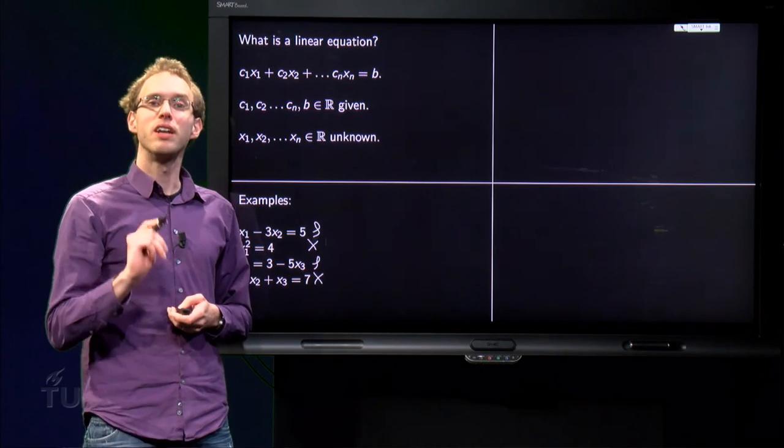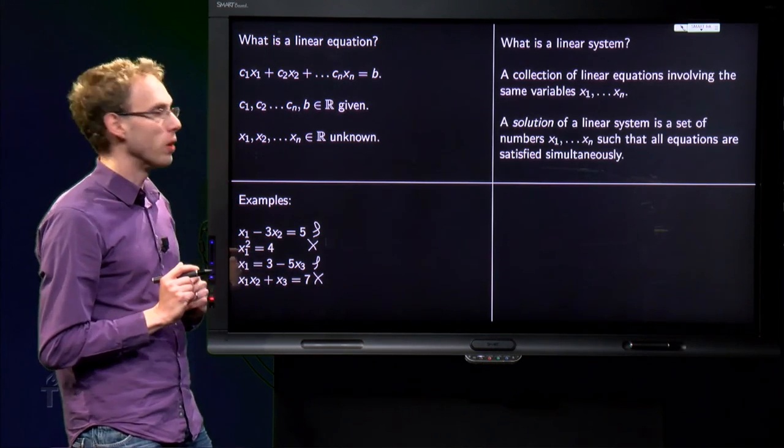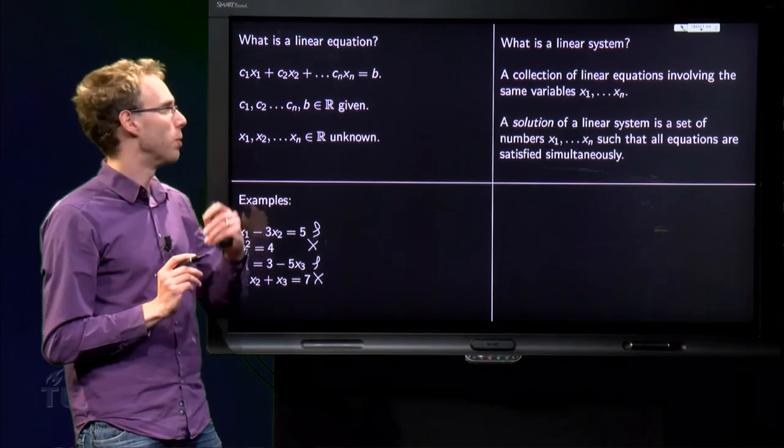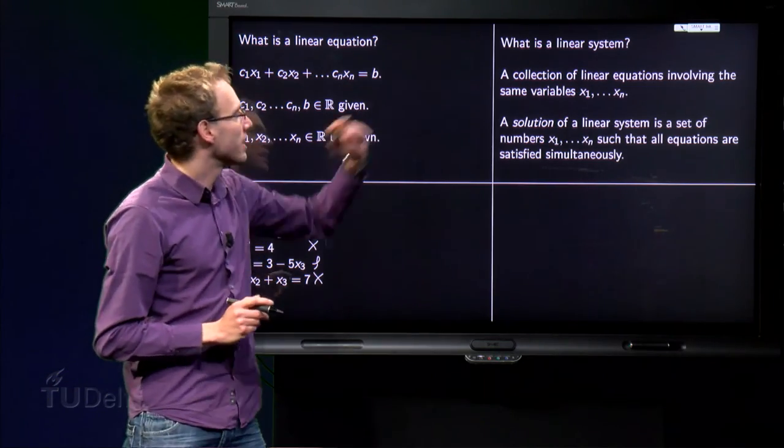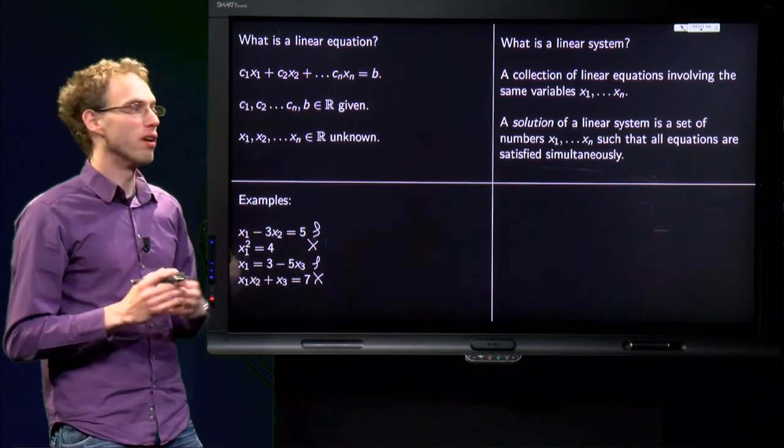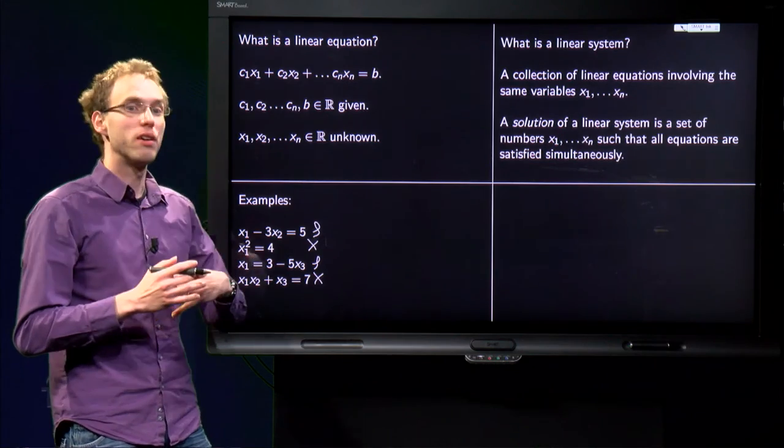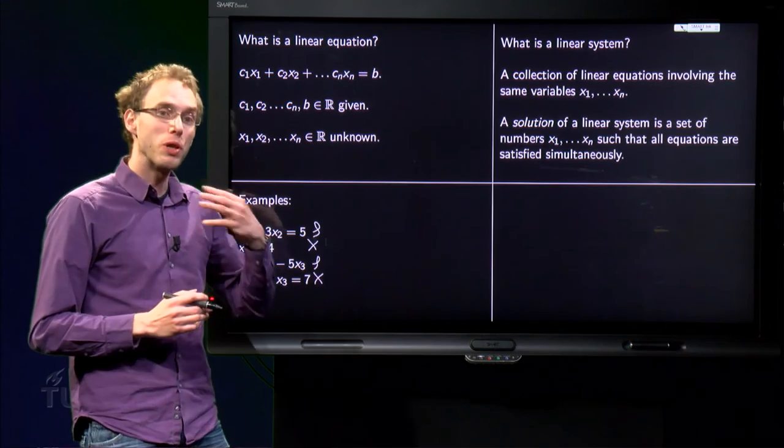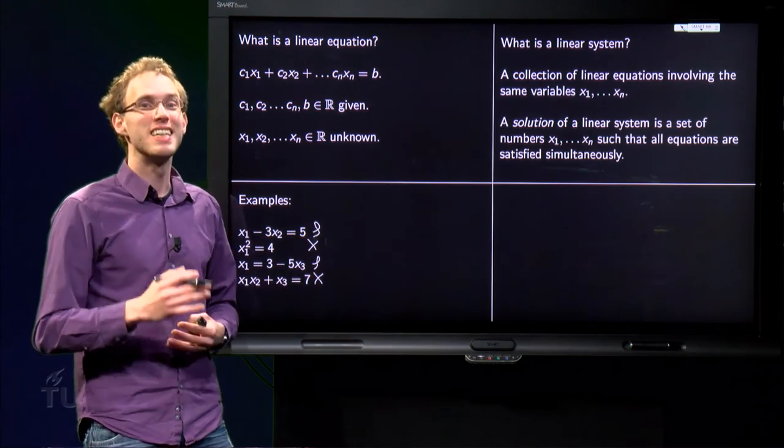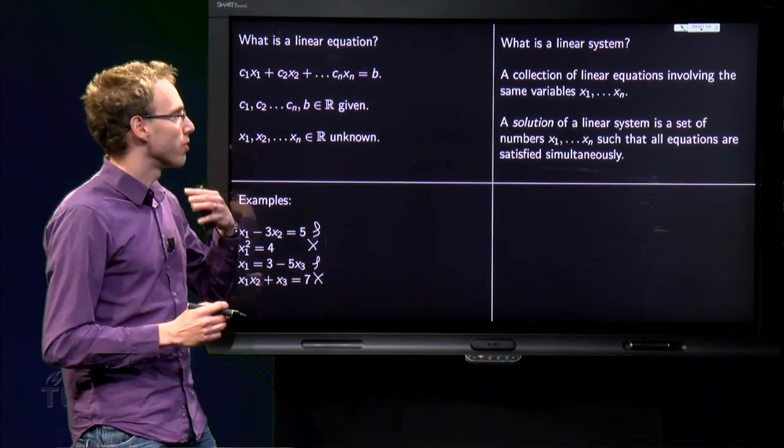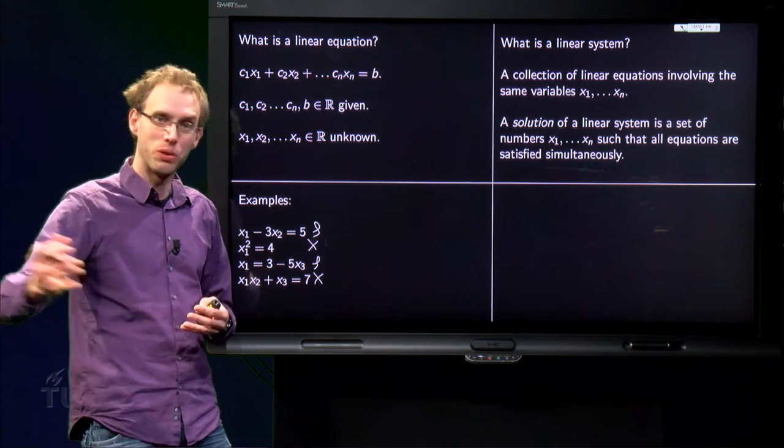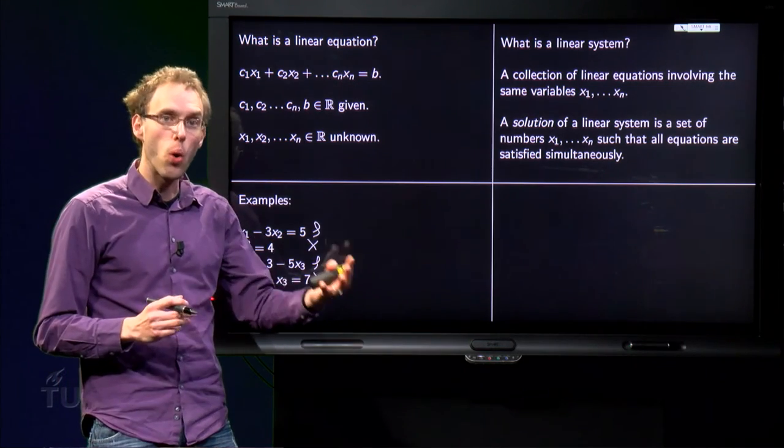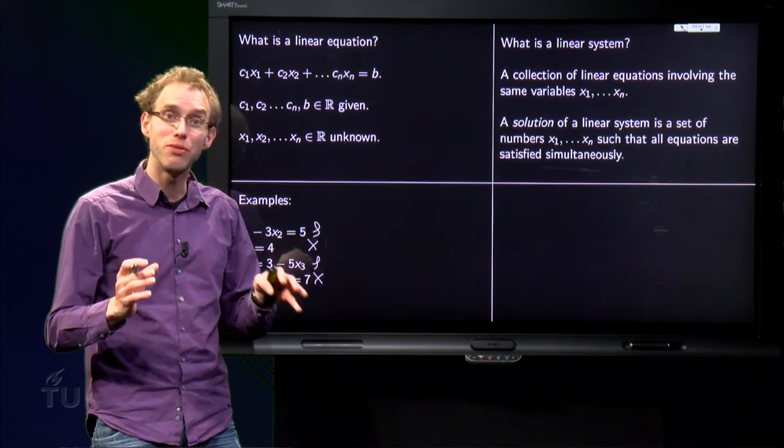So, now we know what a linear equation is. What is a linear system? A linear system is a number of linear equations with the same variables X1 and Xn, and we want to solve all those equations at the same time. So we want to find one set of numbers, X1 to Xn, which satisfies all those linear equations at once.